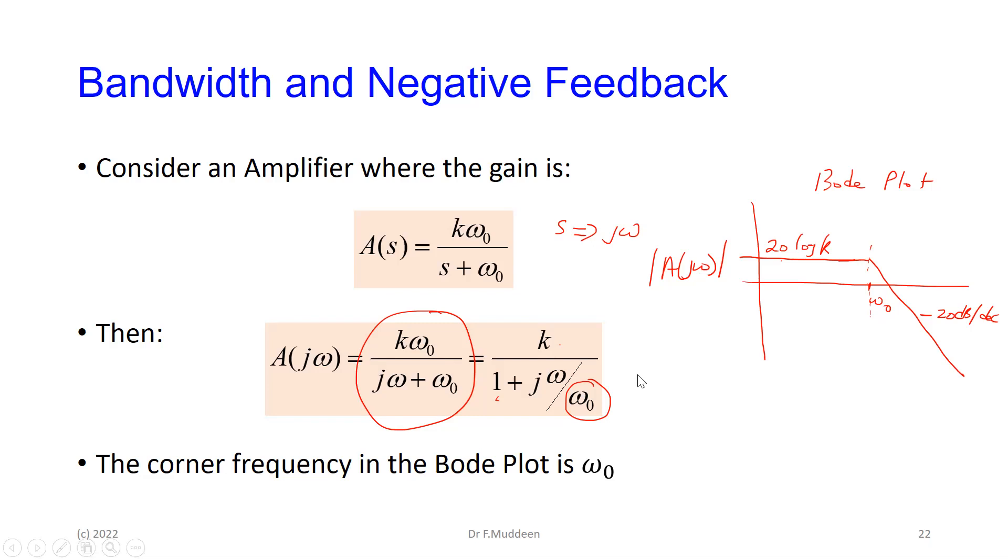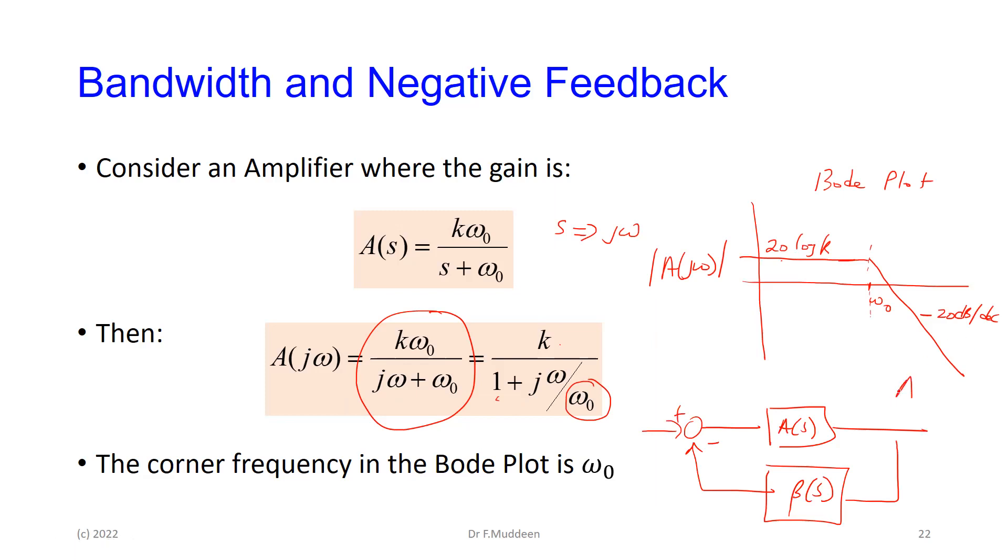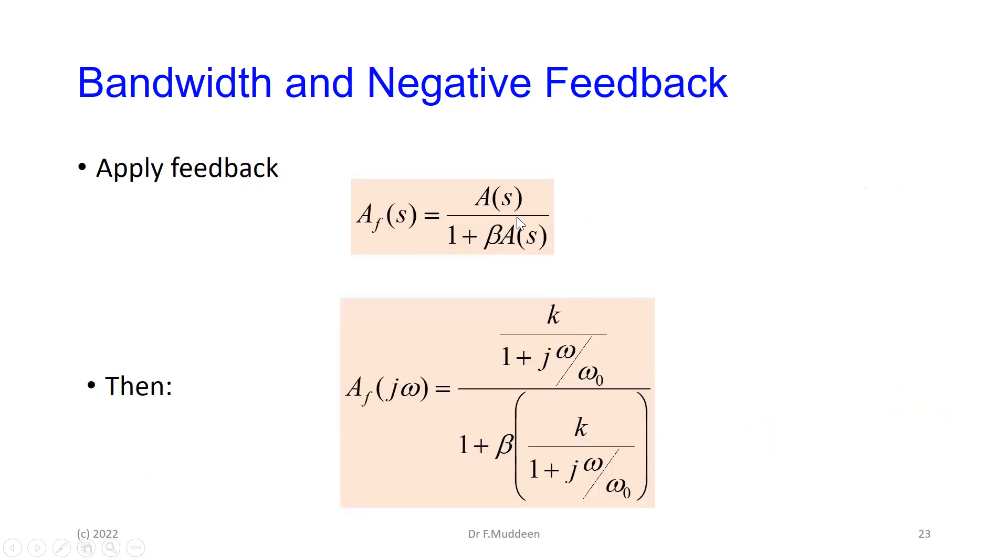So the Bode plot for this would look like this. This is the magnitude of A j omega here. So what we're going to do now is to apply feedback to this amplifier. This is a straight amplifier. So all I have here is just A of s, and this is the frequency response of that amplifier by itself. So the next step now is to apply some feedback here to this and see what happens.